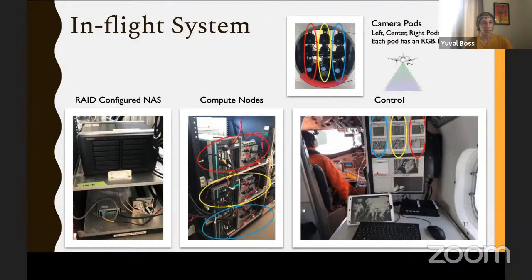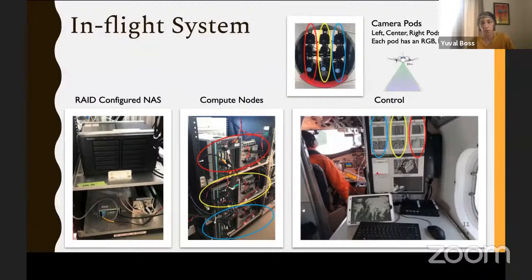This is what the in-flight system looks like. We have a storage device to store all the images we're collecting, and three compute nodes — one per camera pod. We have nine cameras total: a thermal, a color, and an ultraviolet camera in each pod. Each compute node contains a 1080 Ti for machine learning, plus processing power for other embedded work. There's also a control interface where scientists on board can start and stop the system, start and stop detectors, and view the feed to see if any changes need to be made to the camera parameters.